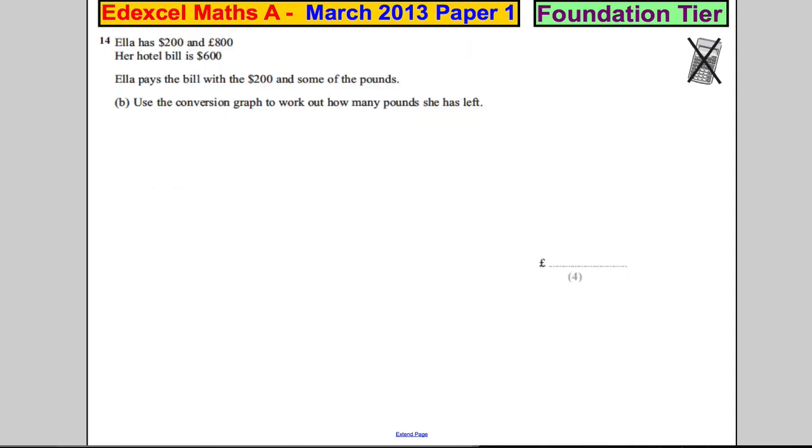Part B: Ella has 200 dollars and 800 pounds. Her hotel bill is 600 dollars. Ella pays the bill with 200 dollars and some of the pounds. Use the conversion graph to work out how many pounds she has left.